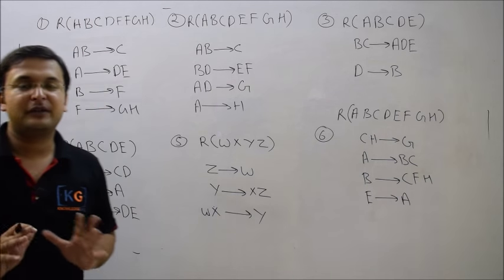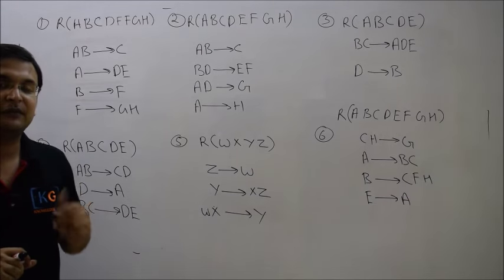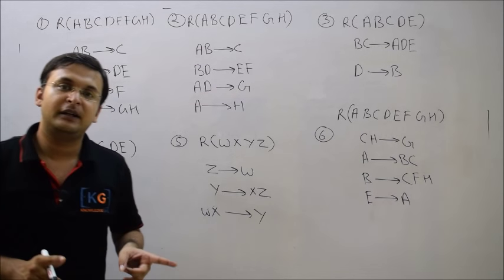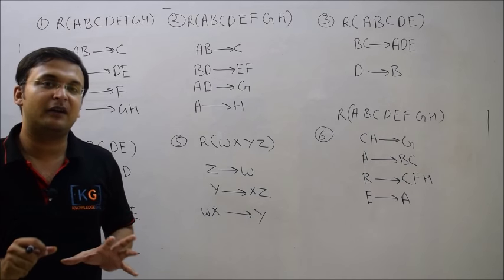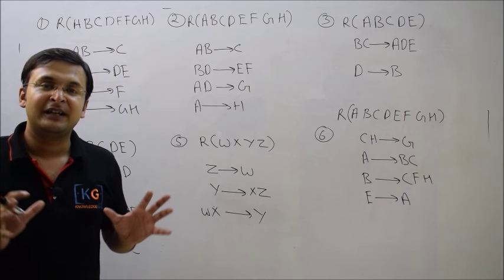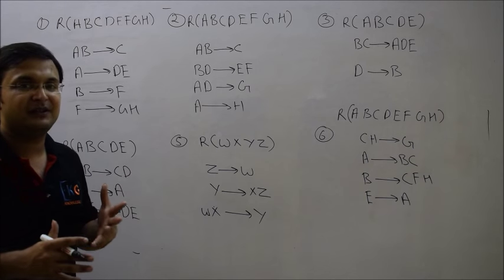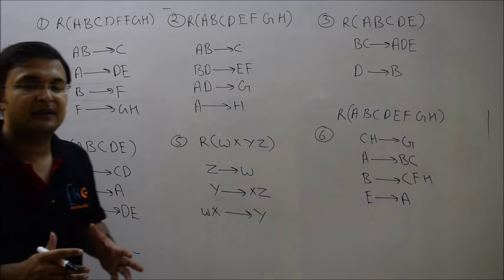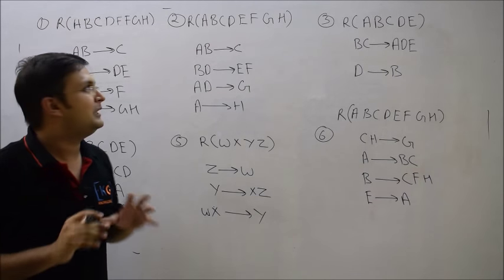Now let's try to find candidate keys. There are two important things. First, we have to find candidate keys correctly, but most importantly, we have to find them in very less time — because in GATE, both things are important. It is not only that you have to solve the question, but also that you have to solve it as fast as possible. So I have developed a procedure. Try to understand it, and I think if you follow it, you will be able to find candidate keys in very less time.